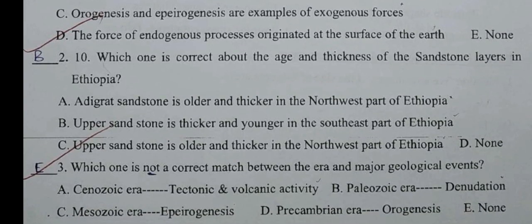Which one is correct about the age and the thickness of the sandstone layer in Ethiopia? A: Adigrat sandstone is older and thicker in the northwest part of Ethiopia. B: Upper sandstone is thicker and younger in the southwest part of Ethiopia. C: Upper sandstone is older and thicker in the north-west part of Ethiopia.